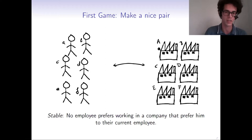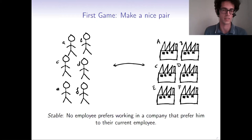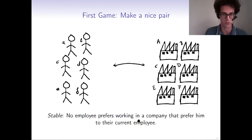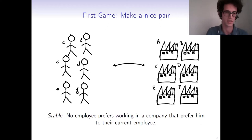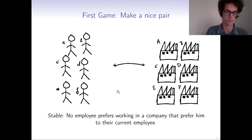A company is unhappy if, when it gets rid of an employee, it can get a better employee from its perspective. This gives us the definition of a stable pairing: no employee prefers working in a company that also prefers him over their current employee. We call it stable because if an employee quits his company, he will never find a company where he can be happier than his current one.